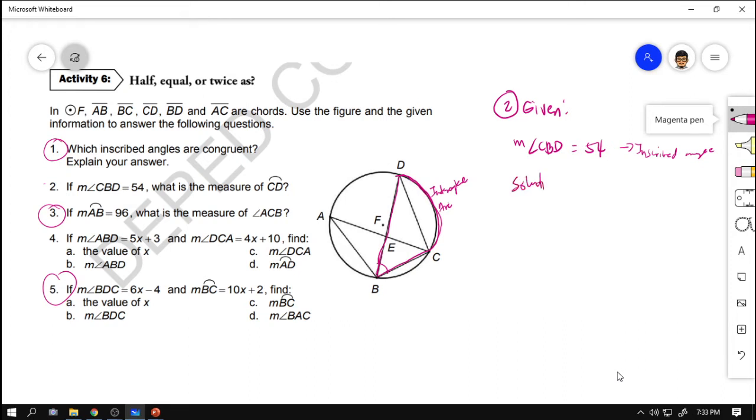So ibig sabihin, the measure of CD is twice the measure of angle CBD. The measurement of arc CD is twice as the measurement of angle CBD. Okay?